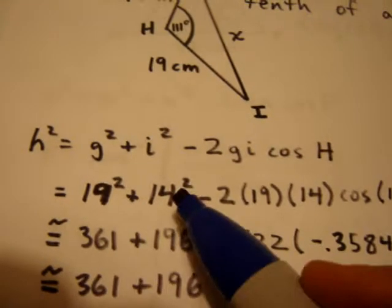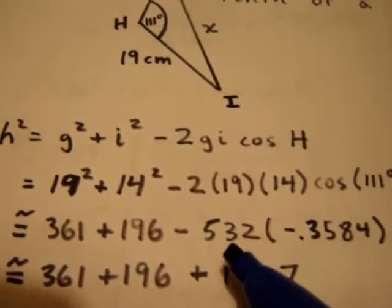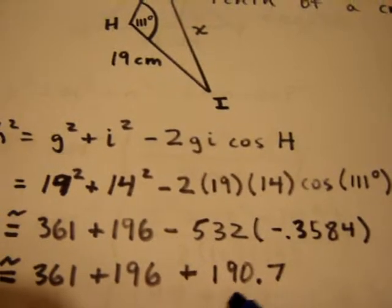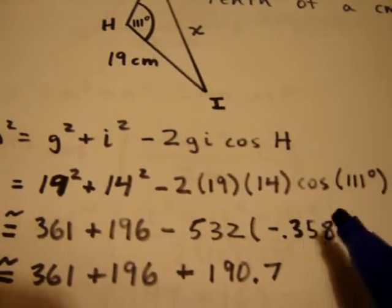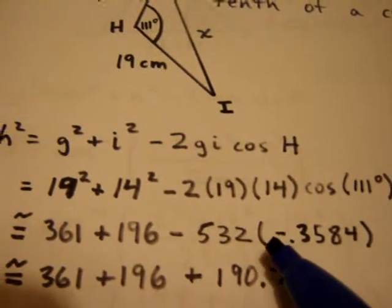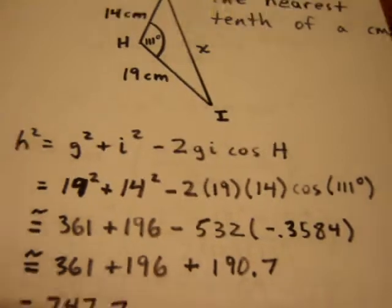So, 19 squared is 361, 14 squared is 196, and then we add 532 times 0.3584, which is 190.7. So, every time we have a negative sign in here, we're going to be adding at this last step. If I had a positive sign in here, I would be subtracting in this last step.